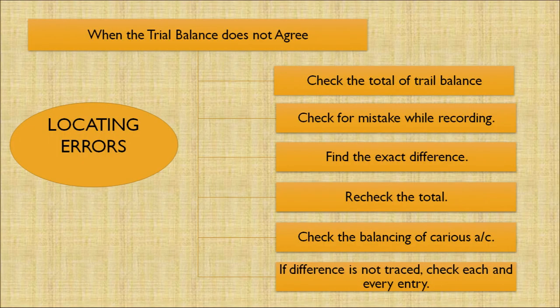Let's discuss how to locate errors when the trial balance does not agree. There are six ways to locate such errors: number one, check the total of the trial balance; second, check the mistake while recording; third, find the exact difference; fourth, recheck the total; fifth, check the balancing of the various accounts; sixth, if the difference is not traced, check each and every entry.